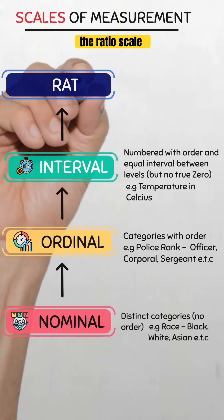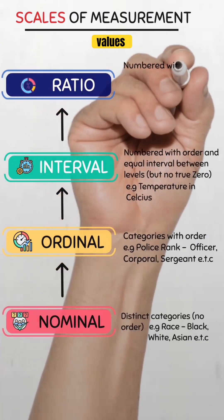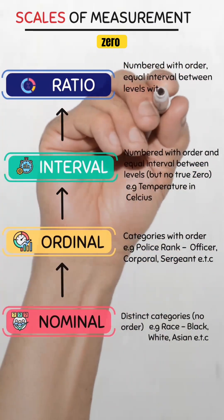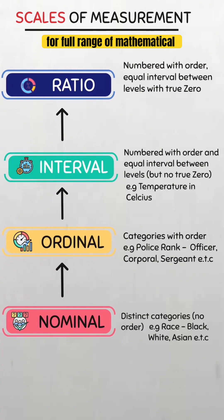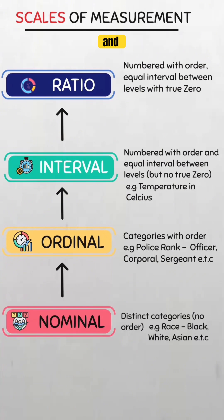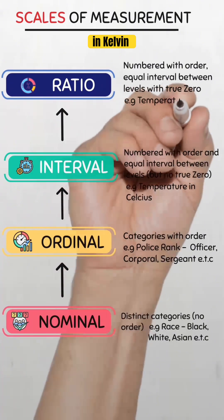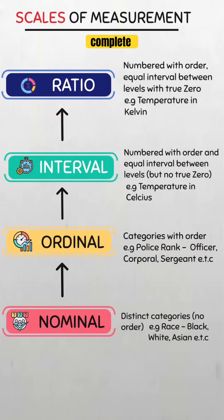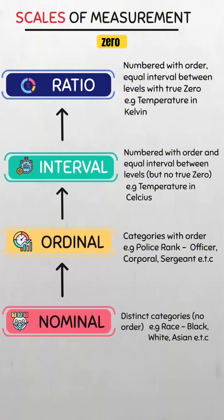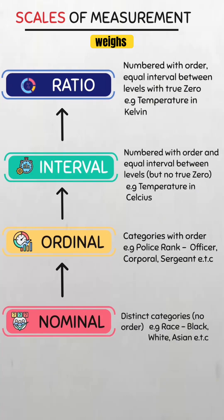And finally, the ratio scale. This scale includes ordered values with equal intervals and a true zero point. It allows for the full range of mathematical operations, including multiplication and division. For example, temperature in Kelvin, where zero means complete absence of heat. Think of it like measuring weight on a scale — zero means no weight at all; that's absolute zero. Every unit is equally spaced, and you can say something weighs twice as much as another thing, and it's mathematically valid.